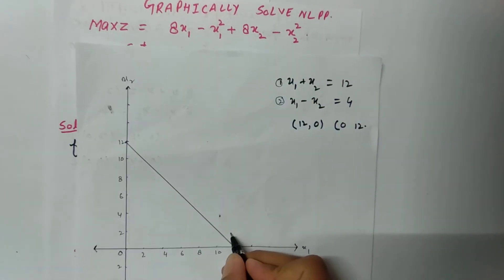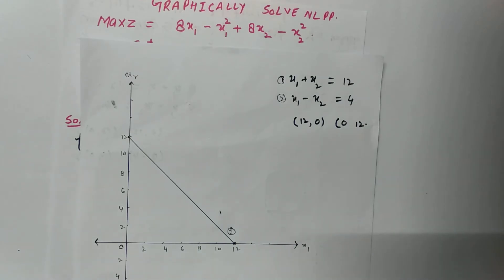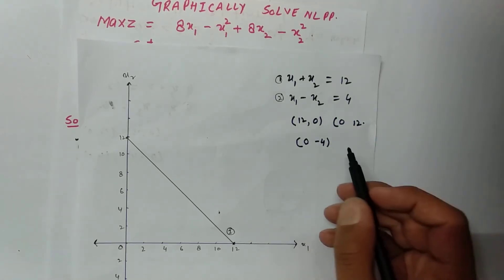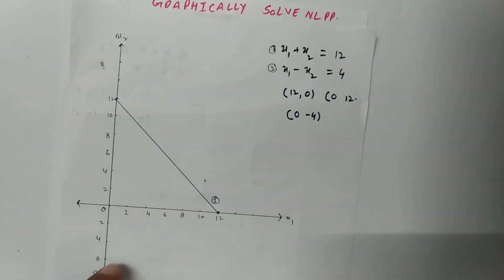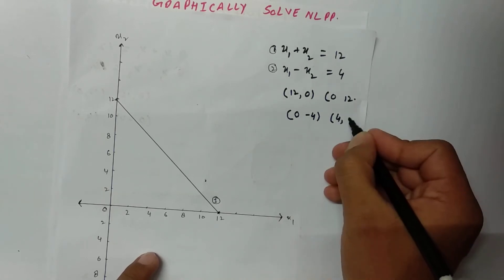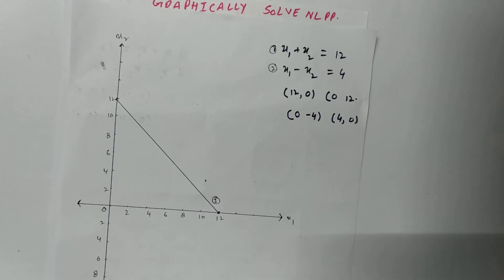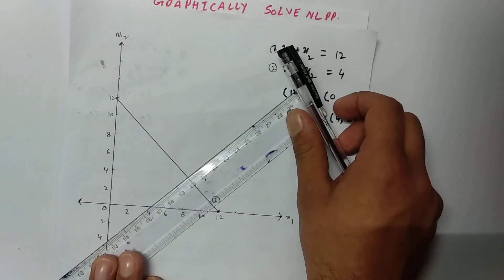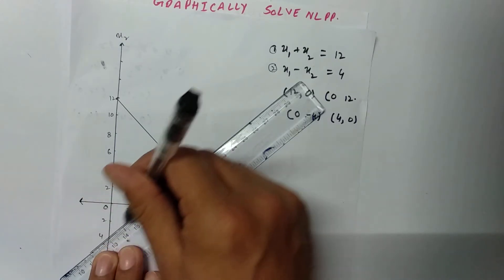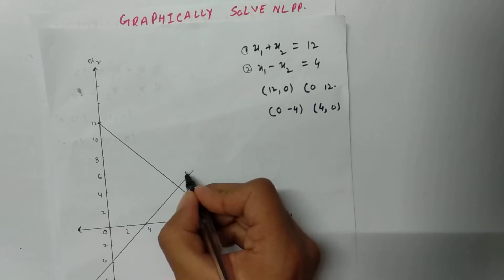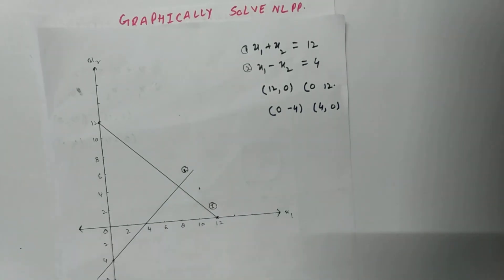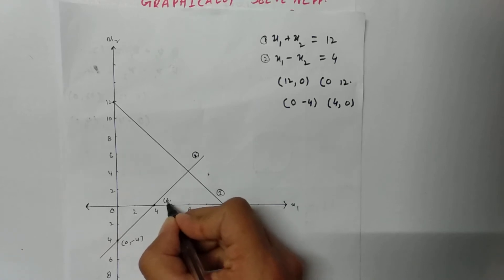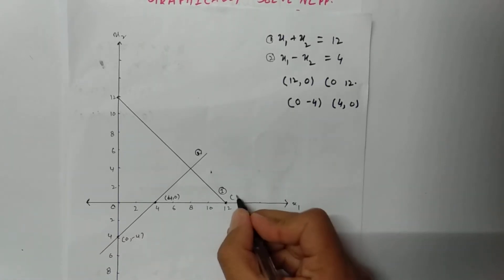Now I will plot the second line. For x1 − x2 = 4: when x1 = 0, x2 = −4, giving point (0, −4); and when x2 = 0, x1 = 4, giving point (4, 0). I will plot these points here. This is line number two.